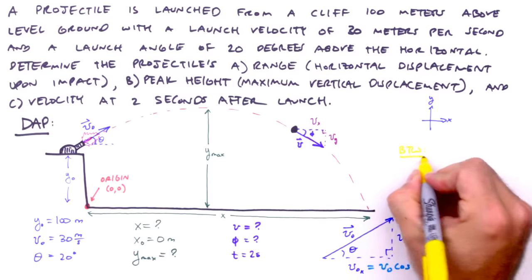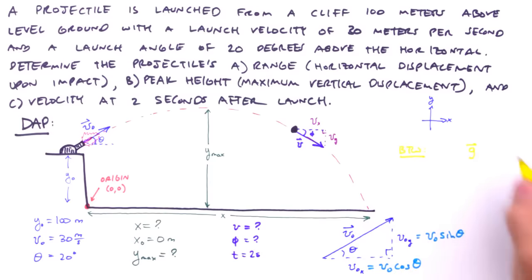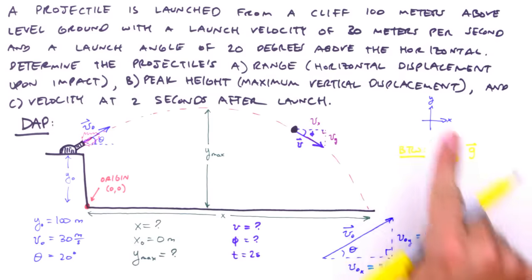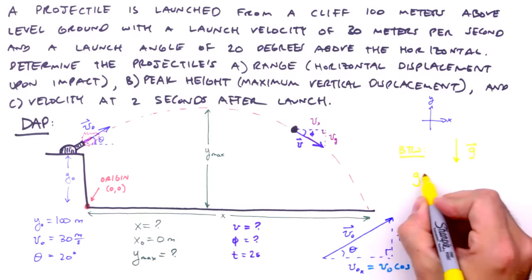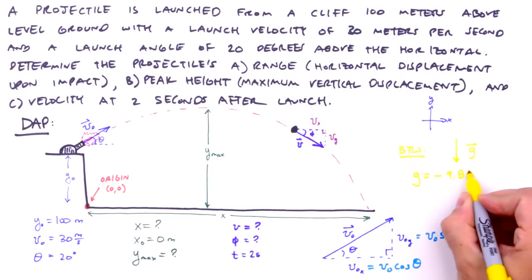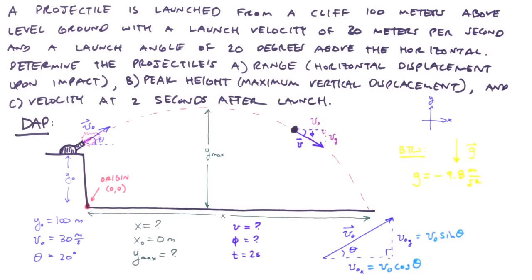By the way, we've got an implied known that should be listed: the acceleration due to gravity. What value should we use for g? Or more to the point, is the magnitude of g positive or negative? Well, it all depends on our coordinate system, so we need to compare the acceleration vector to our chosen coordinate system. Since we align the positive y-axis with the upward direction, and the acceleration vector is downward, that means that the magnitude of g for this problem will be negative 9.8 meters per second squared. Okay, we're finished with identifying the knowns and unknowns.